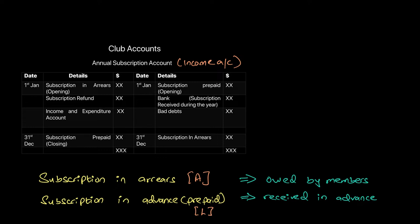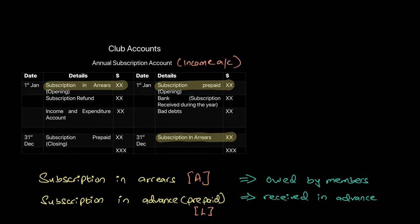Subscription in advance becomes a liability for the club. Once we have determined what's an asset and what's a liability, we can look at our annual subscription account. Any subscription in arrears, because it's an asset, should have a debit balance brought down — that's the opening asset, the membership fee not yet received. The closing subscription in arrears, the balance carried down, comes on the credit side. Similarly, subscription received in advance, being a liability, should have a credit balance brought down, and the closing balance carried down also comes on the credit side.